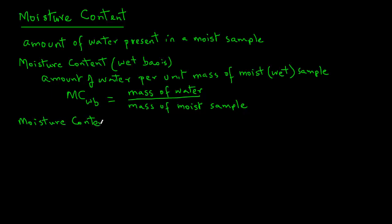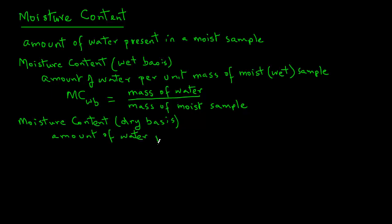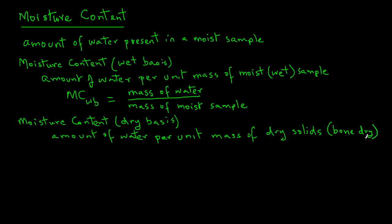Another way to express moisture content is on dry basis. In this case, it is the amount of water per unit mass of dry solids present in the sample. By dry solids, we mean bone dry. In other words, there is no water present in those solids.